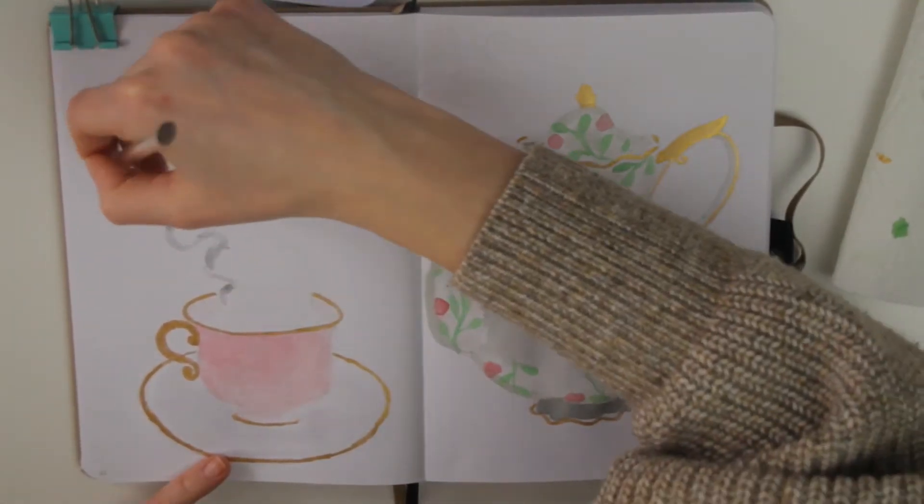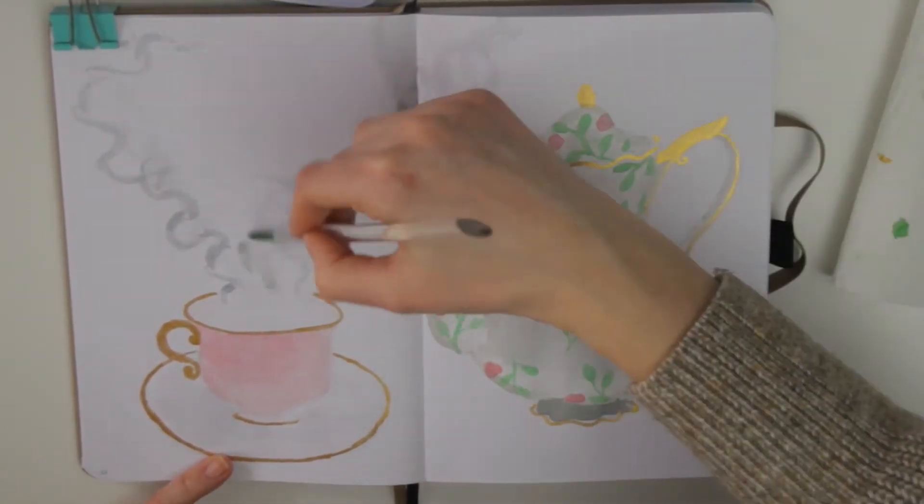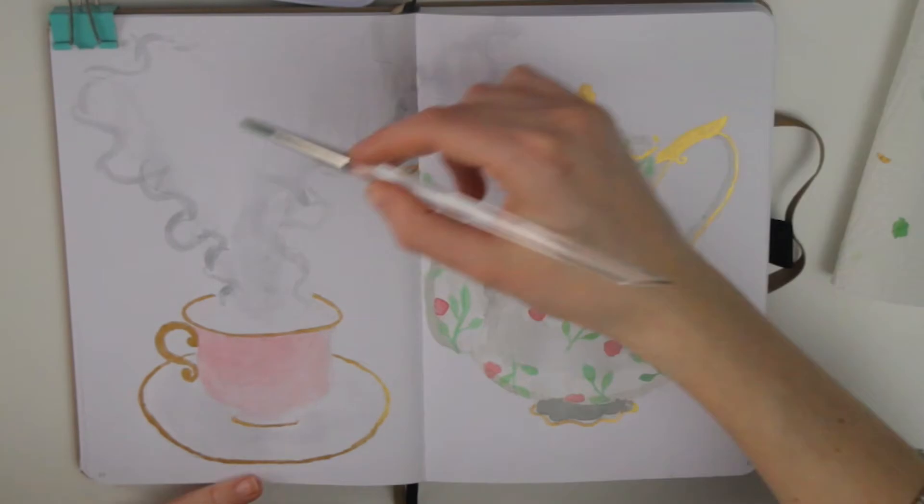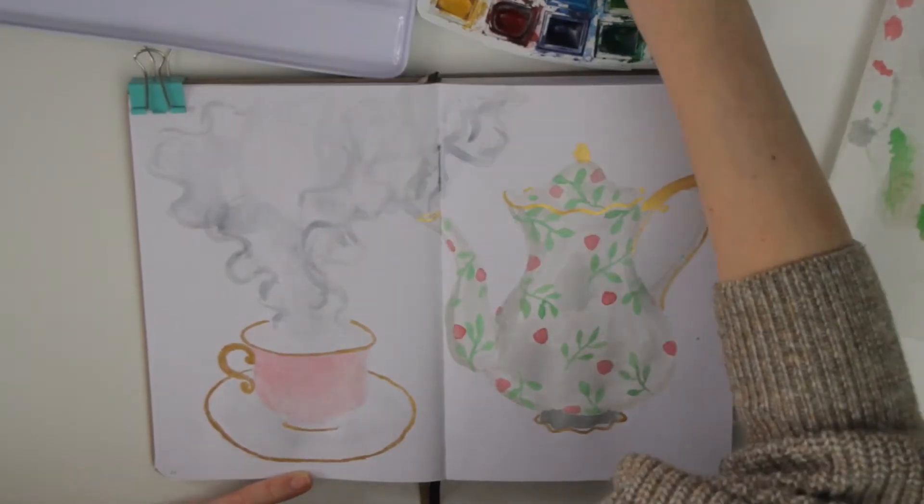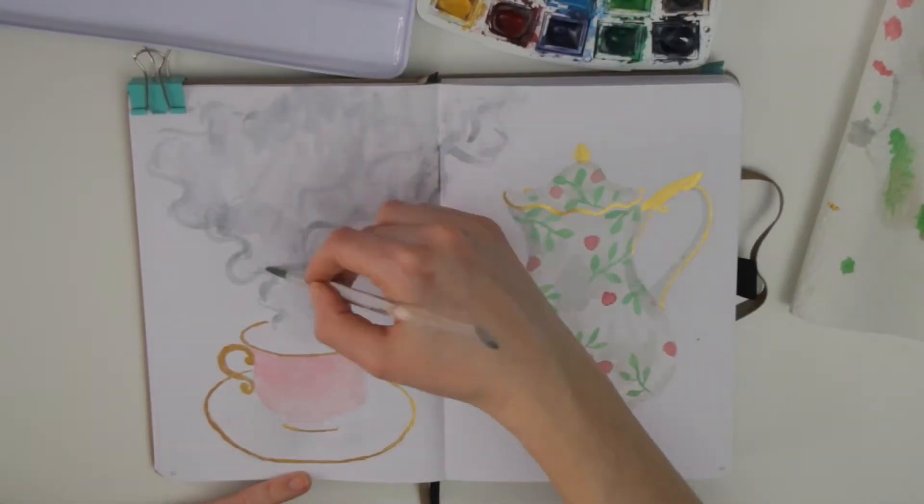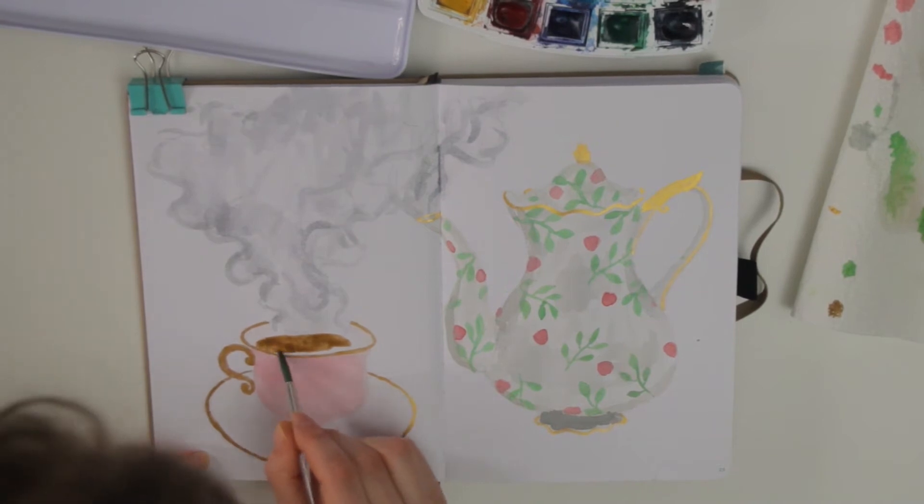And then I added in the steam, which is a lot for a cup of tea but let's just pretend it's a steaming hot cup of tea, and then in that smoke I wrote February. You'll see me do it later, which I think looks really nice.